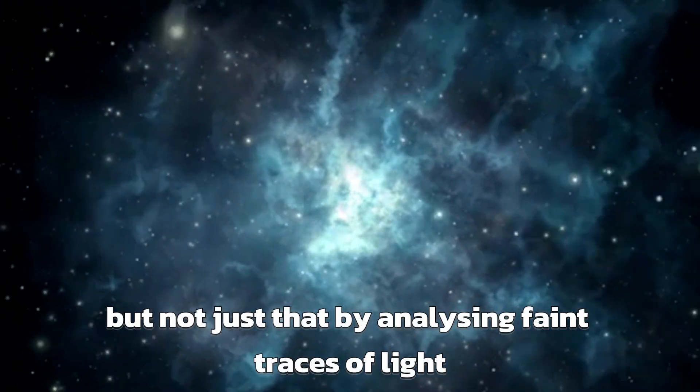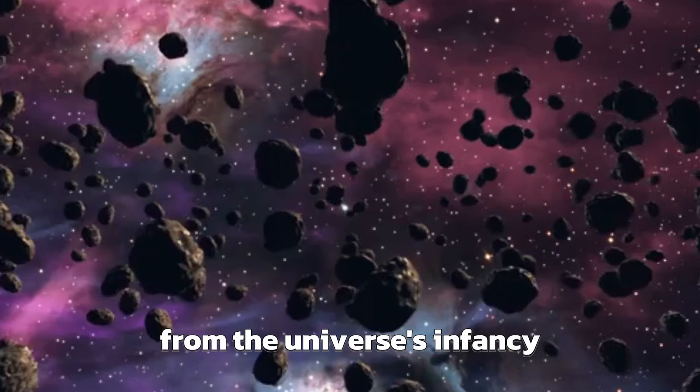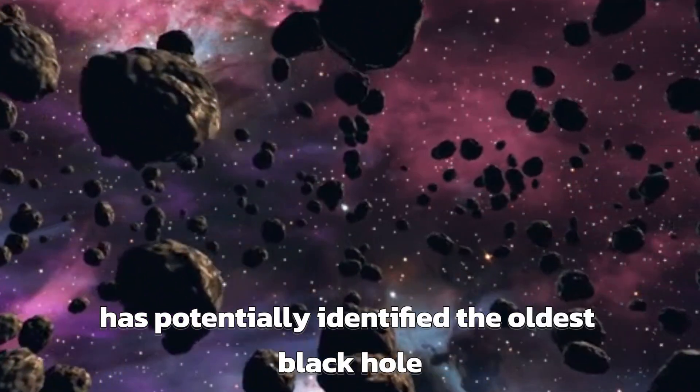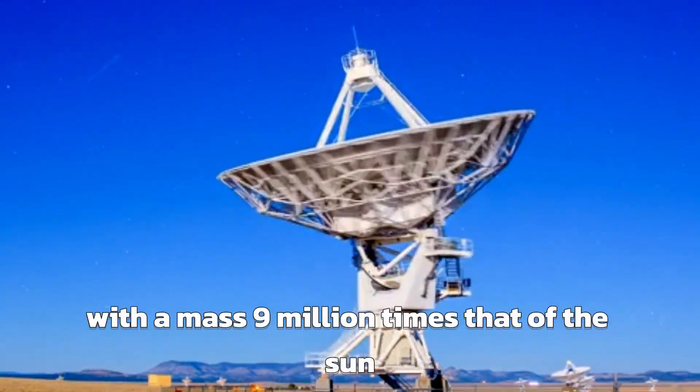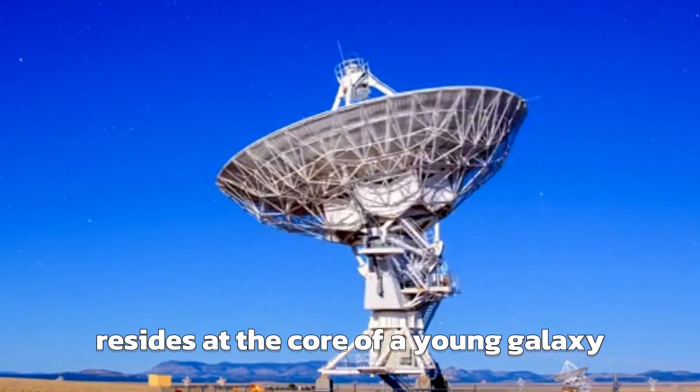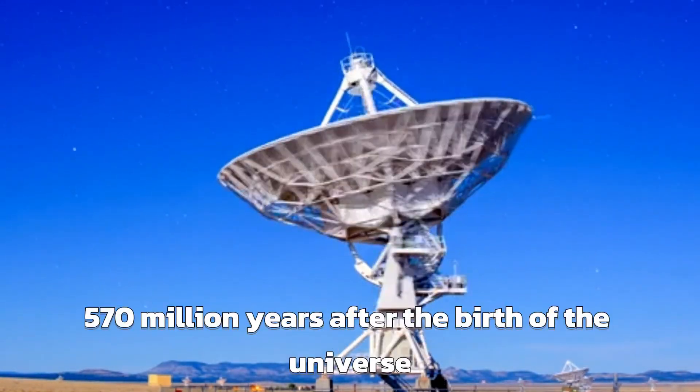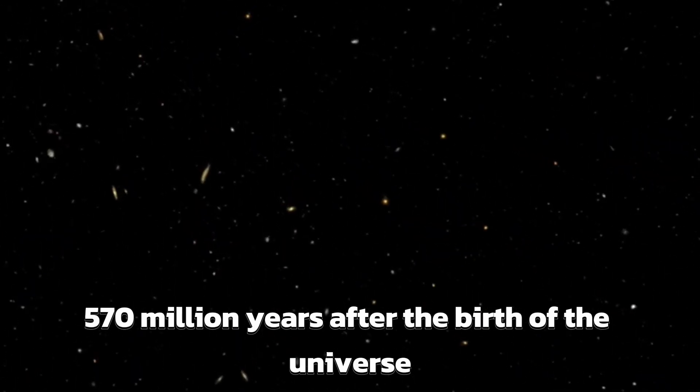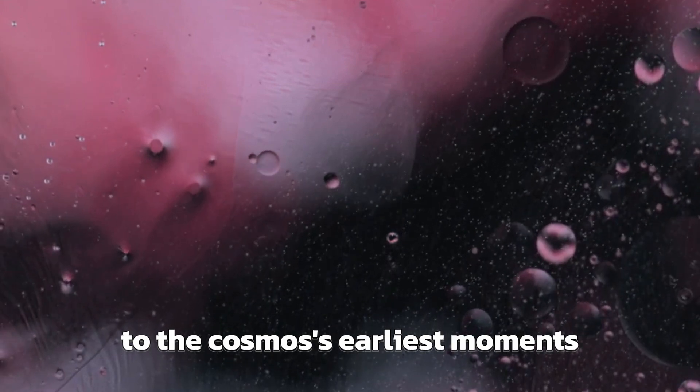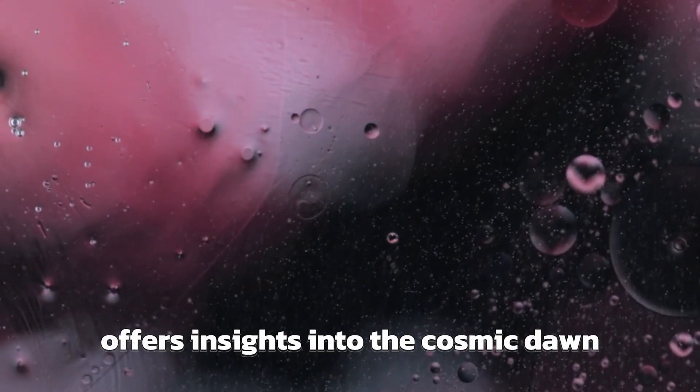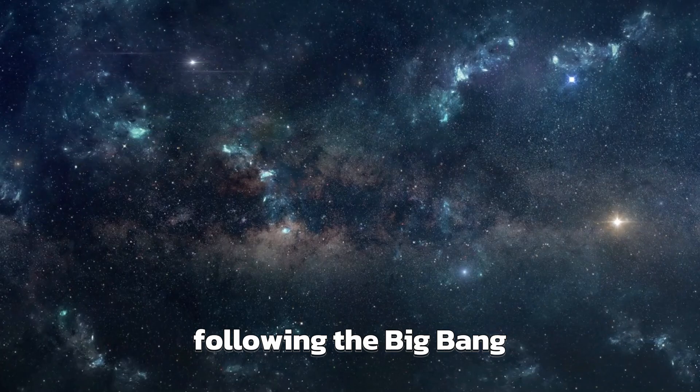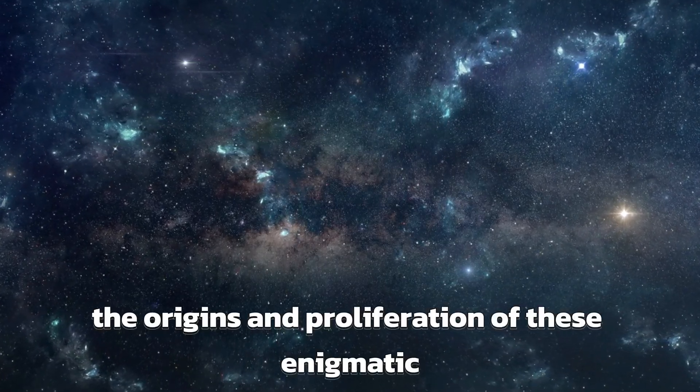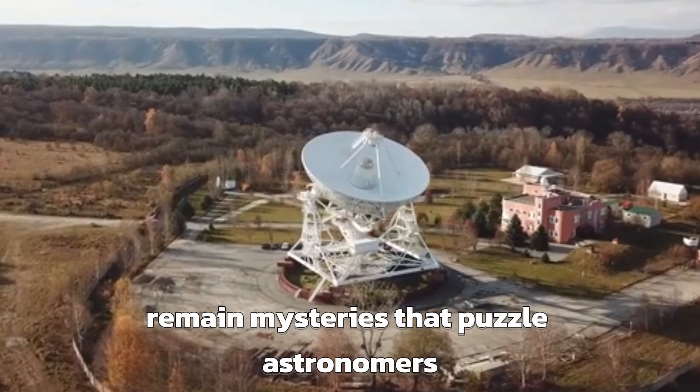But not just that, by analyzing faint traces of light from the universe's infancy, the James Webb Space Telescope has potentially identified the oldest black hole ever observed. This supermassive black hole, with a mass 9 million times that of the Sun, resides at the core of a young galaxy that formed 570 million years after the birth of the universe. Thanks to Webb's powerful cameras capable of peering back in time to the cosmos's earliest moments, this monumental discovery offers insights into the cosmic dawn when numerous black holes grew in size over the course of a billion years following the Big Bang. The origins and proliferation of these enigmatic cosmic entities remain mysteries that puzzle astronomers.